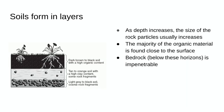Soils form in layers — this second diagram again shows that at the top is where the rich organic material called humus is located. As you go farther down, there's less and less organic material, bigger chunks, and you get closer to the bedrock.